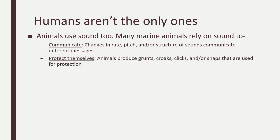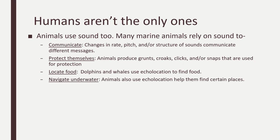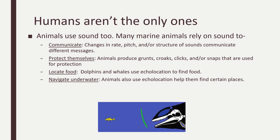Animals use sounds to protect themselves. They produce grunts, clicks, and snaps that are used for protection. They're also able to use sound for locating food. Dolphins and whales use echolocation to find food and to navigate underwater. Animals also use echolocation to help them find certain places. This is an example of how whales are able to tell how far away fish are.